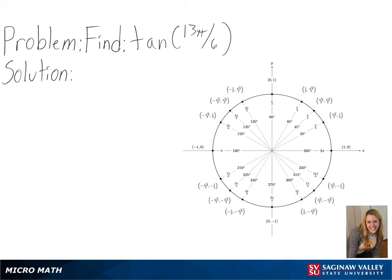We can see here that our value is larger than 2π, so we will start out by separating our 13π over 6 into π over 6 plus 12π over 6, or π over 6 plus 2π.